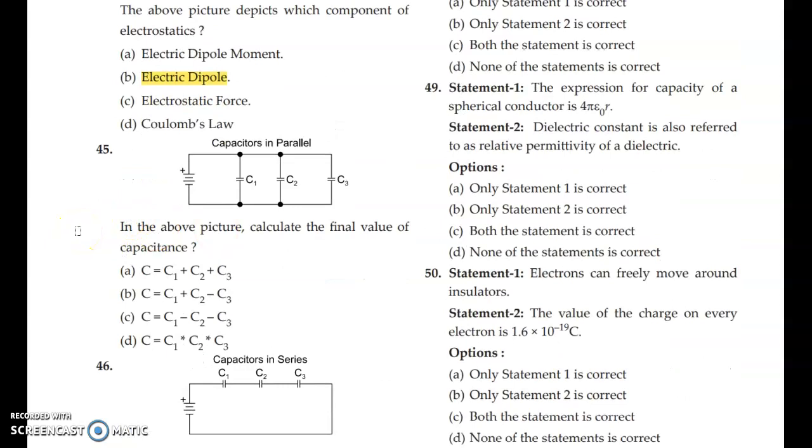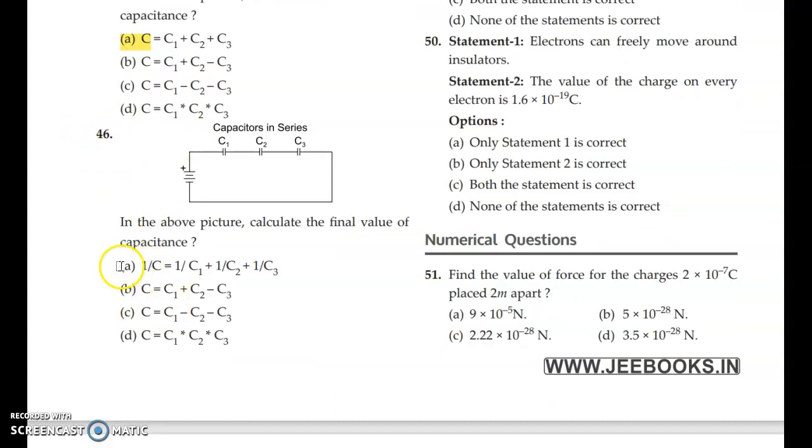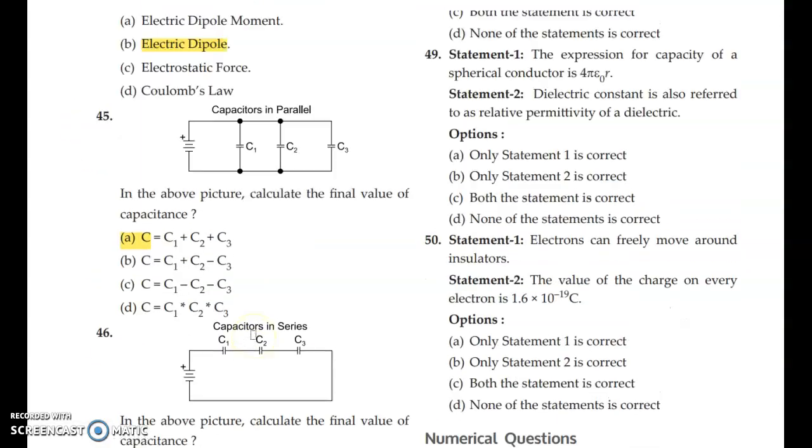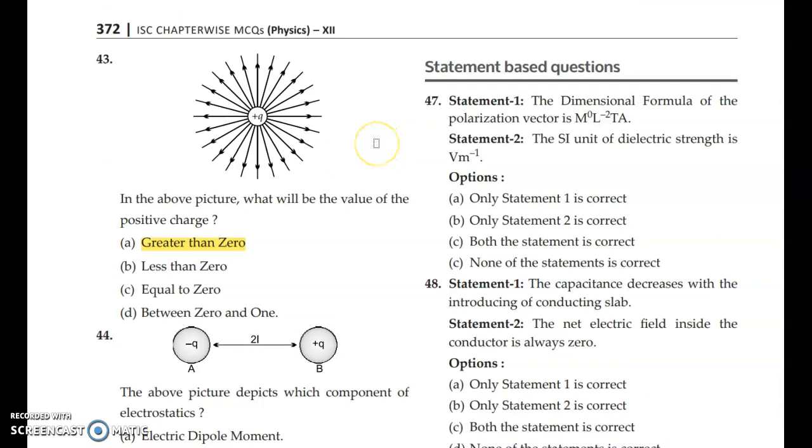Question 45: You can see this picture, calculate the final value of capacitance. When capacitors are placed in parallel, the answer will be option A. Question 47: The dimensional formula of the polarization vector and the SI unit of dielectric strength. You can read both and see the options. Answer is option C, both statements are correct.